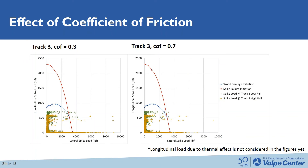This slide compares the effect of the coefficient of friction between the plate and tie. The coefficient of friction has no effect on the longitudinal spike load because they are loaded when the plate is uplifted. But the coefficient of friction does affect the lateral spike load. When the coefficient of friction increased from 0.3 to 0.7, the friction between the plate and tie increased, so the percentage of plate load transferred to each spike decreased. The majority of the lateral spike load was shifted inside the curve when the coefficient of friction is 0.7.